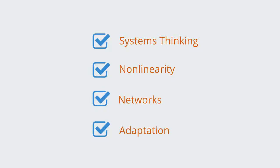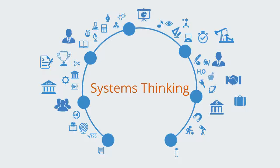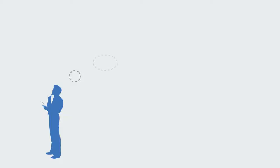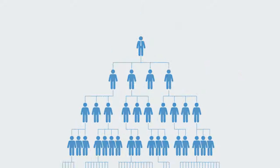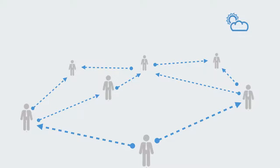Complexity management is based on the systems thinking paradigm. Put simply, systems theory or systems thinking is a holistic way of looking at the world. This paradigm posits that the parts of a system can only be properly understood, and thus managed, when taken in relation to the whole system. Whereas our traditional analytical approach takes a system and breaks it down, focusing on the individual parts, systems thinking looks instead at the relationship between the parts and the context or environment within which something exists.